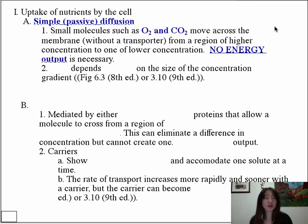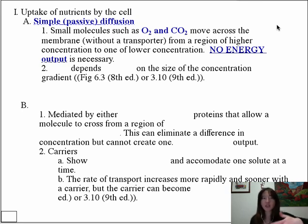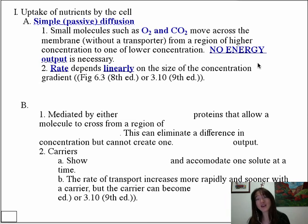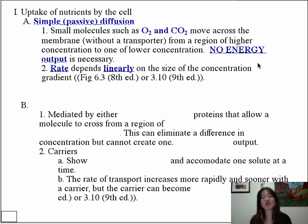The rate of transport in simple diffusion depends linearly on the concentration gradient — the greater the gradient, the faster the rate. This has an analogy with the bouncer at a dance club: the more molecules waiting outside, the more quickly they enter, and eventually the tide turns as they start fluxing out in response to the concentration gradient.